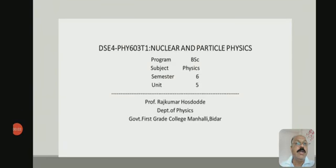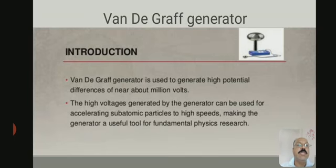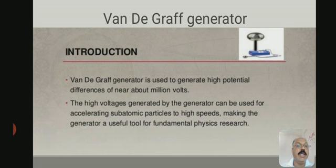Good morning students. In today's class we are going to discuss the Van de Graaff generator. What is meant by the Van de Graaff generator? It is used to generate high potential differences of nearly about a million volts. The high voltages generated by the generator can be used for accelerating subatomic particles to high speeds, making the generator a useful tool for fundamental physics research.